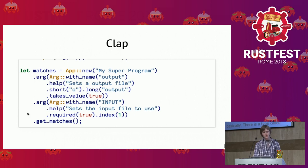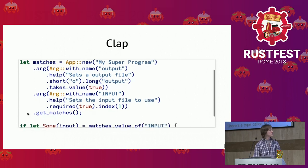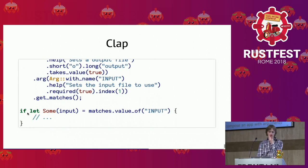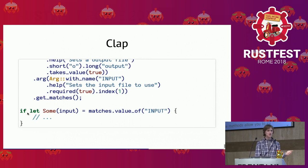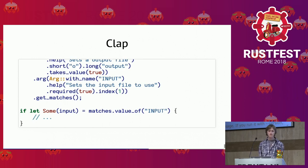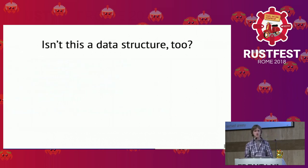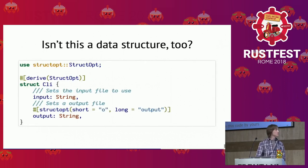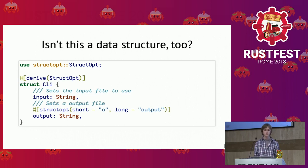But clap has a similar issue to our JSON case before. We are looking at argument values and dealing with the data inside manually. Maybe we can do something similar to what serde did. Isn't a command line arguments structure just a data structure too? There is a library called structopt that allows you to describe your command line arguments as a struct and derive basically all the code we've seen before, including using doc comments for help messages.